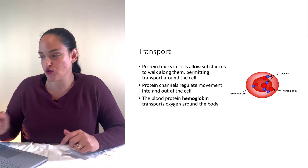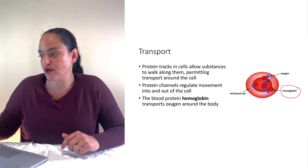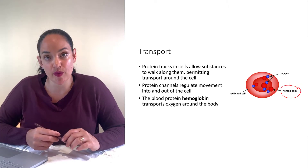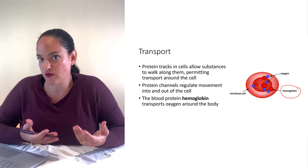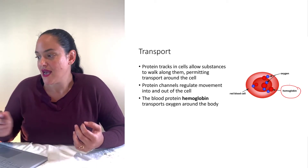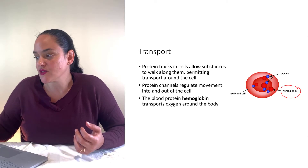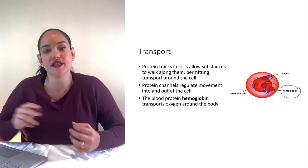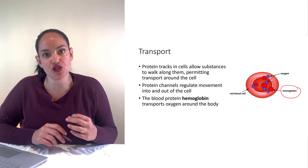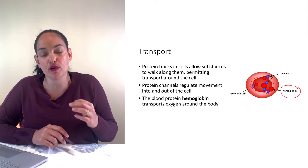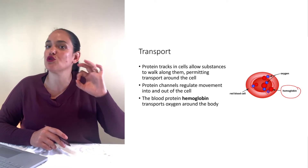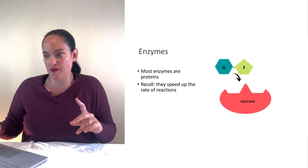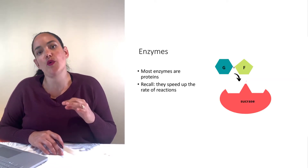Another great example of protein as a transport is hemoglobin, which you may know is also referred to as a blood protein. Hemoglobin is a protein that has four sites for iron, and each of those sites also has a place where oxygen can bind. So hemoglobin allows us to transport oxygen in the blood.